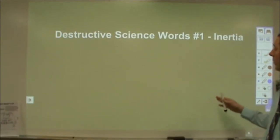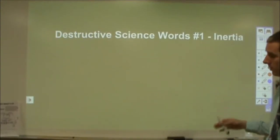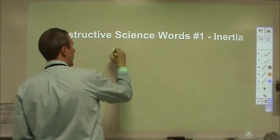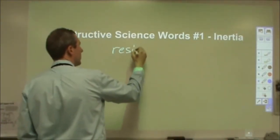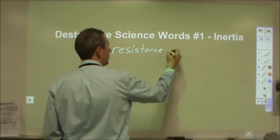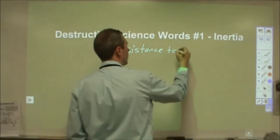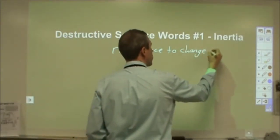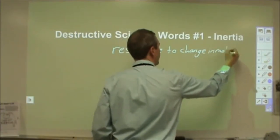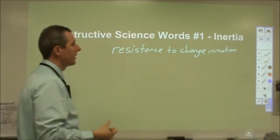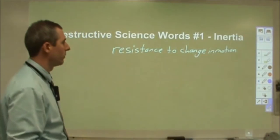Our first destructive science word is inertia. I want to start by going through what inertia is. Inertia is commonly said to be resistance to a change in motion. I want to break down that definition a little bit to get some clarity into why I think this is a destructive word.